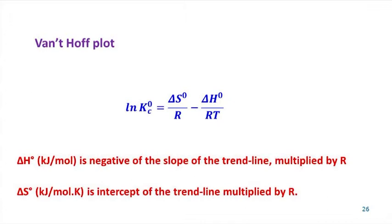From the above equation, the standard enthalpy change ΔH° in kJ/mol is the negative of the slope of the trend line multiplied by R, and the standard entropy ΔS° expressed in kJ/mol/K is the intercept of the trend line multiplied by R. The units of standard enthalpy change ΔH° are kJ/mol.